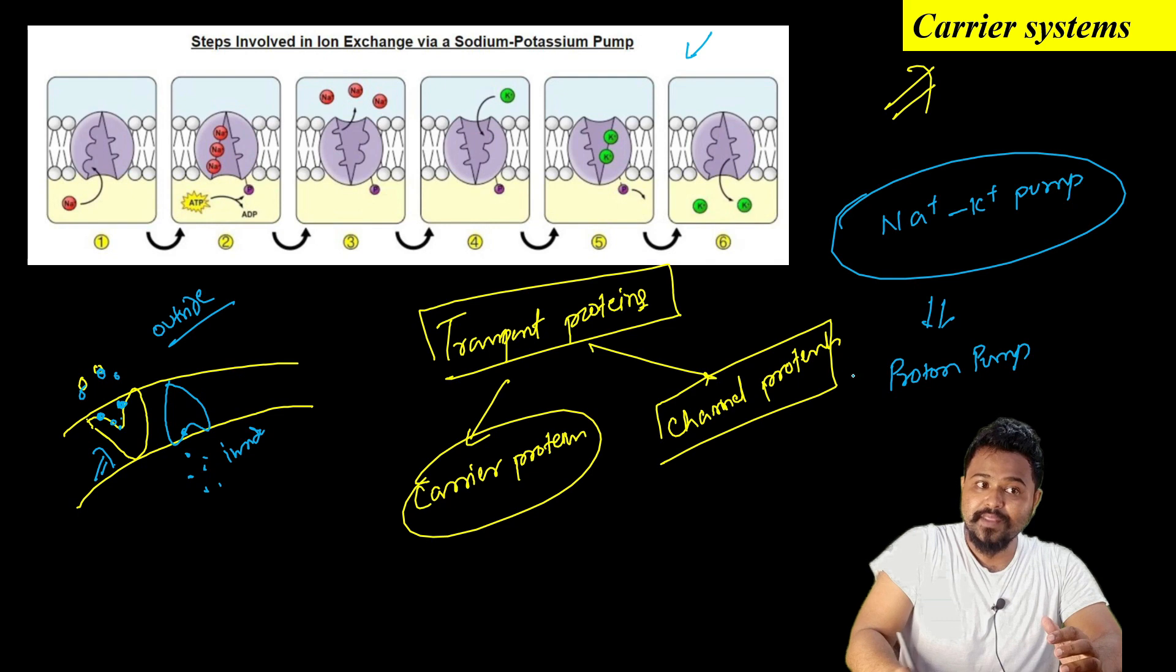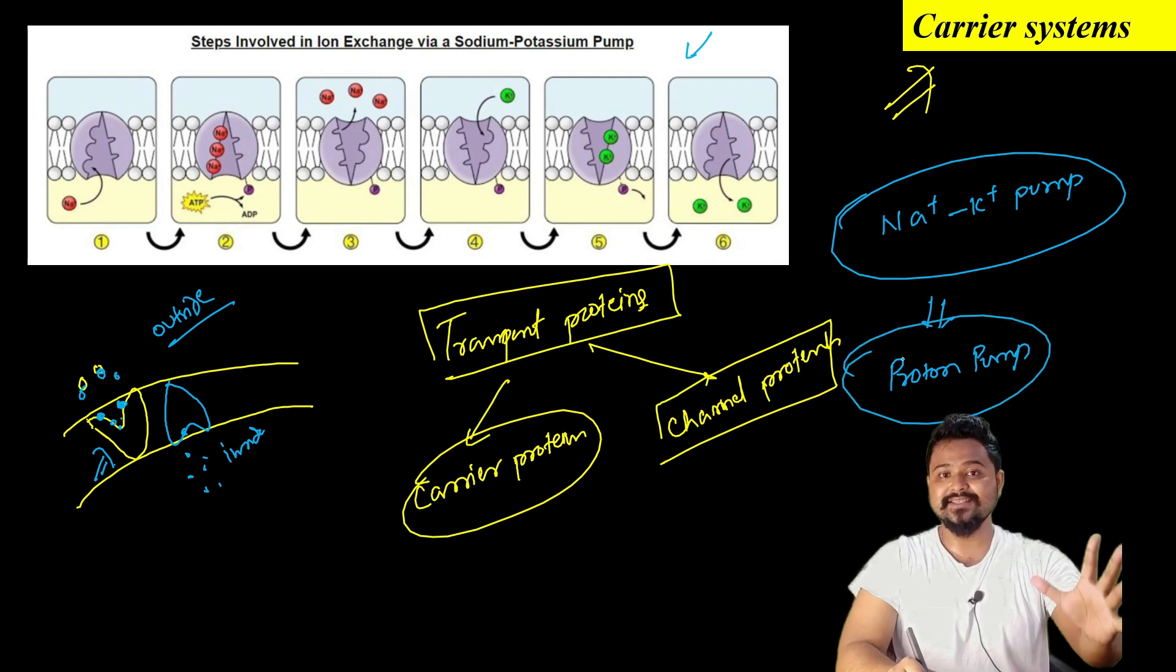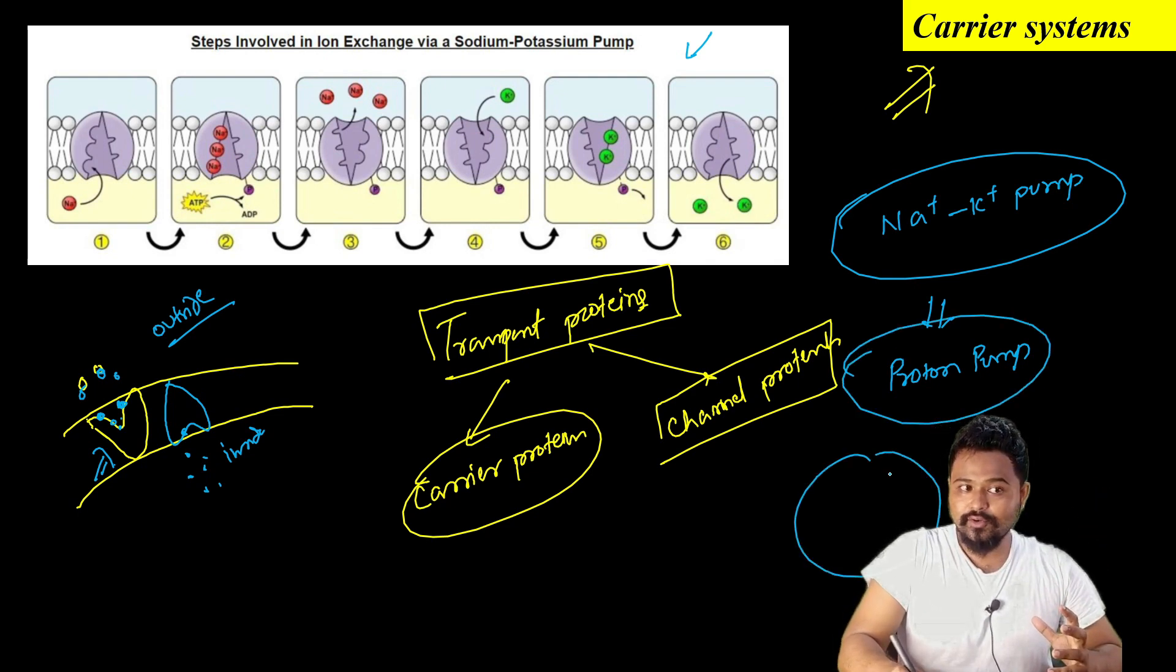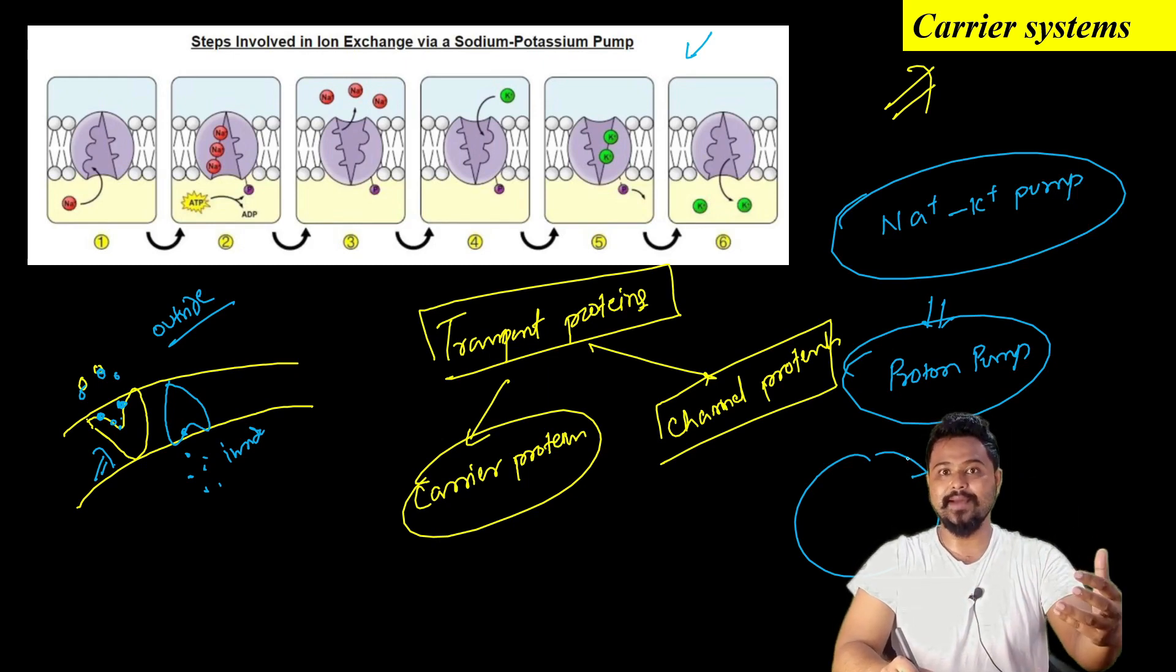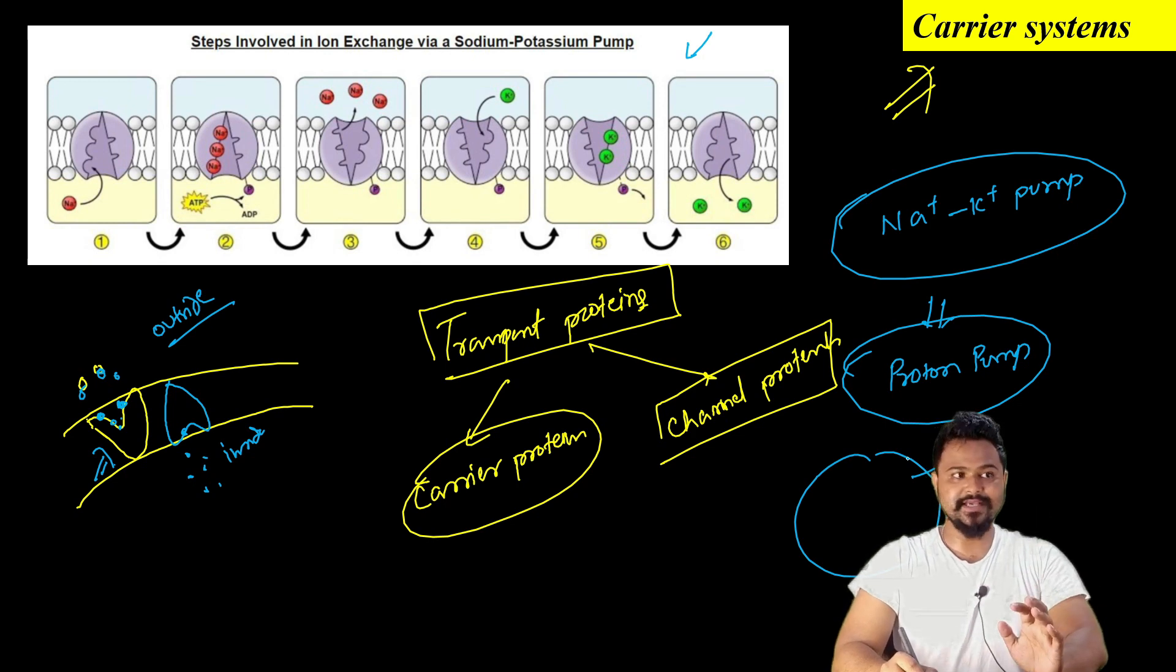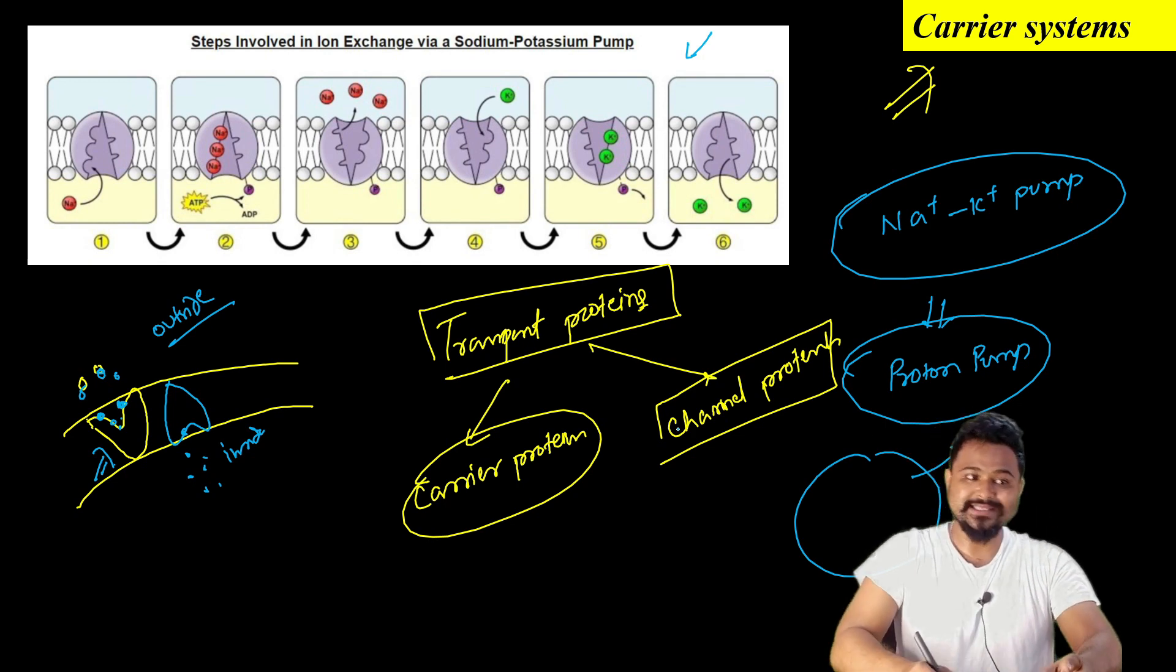In plants there are proton pumps, which are carrier systems that actively transport hydrogen ions using ATP.